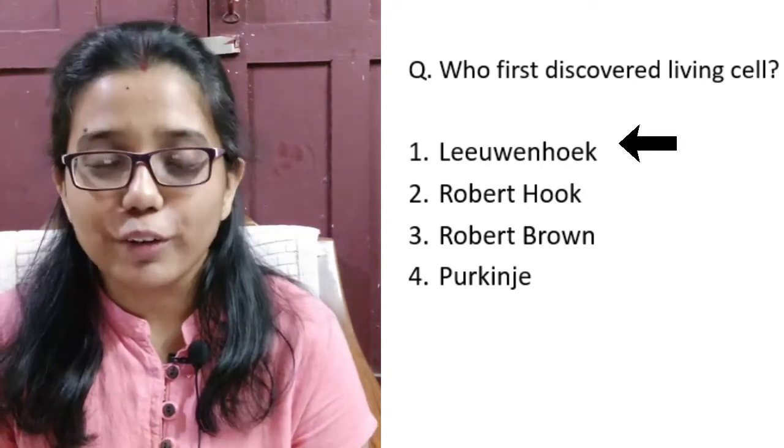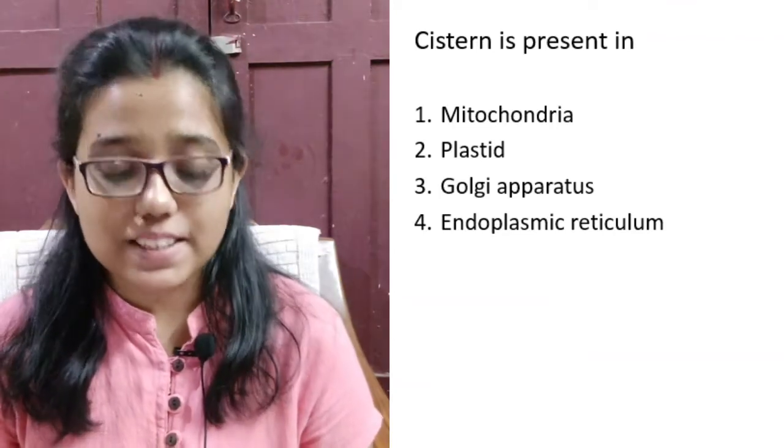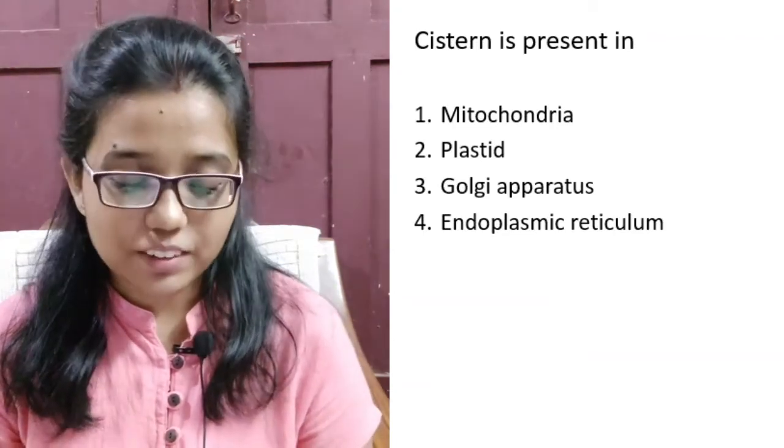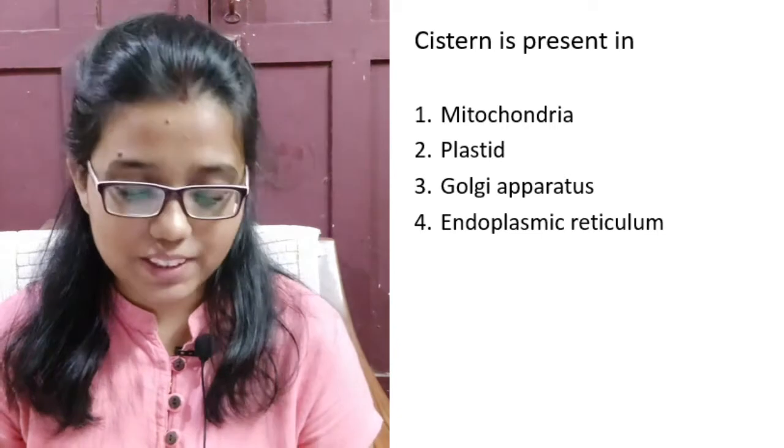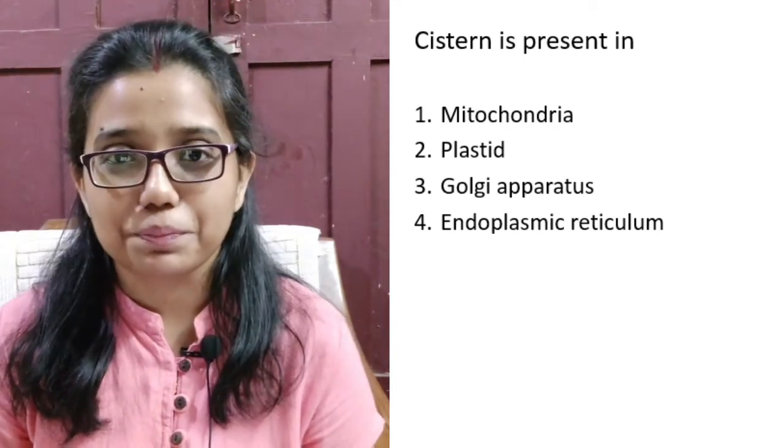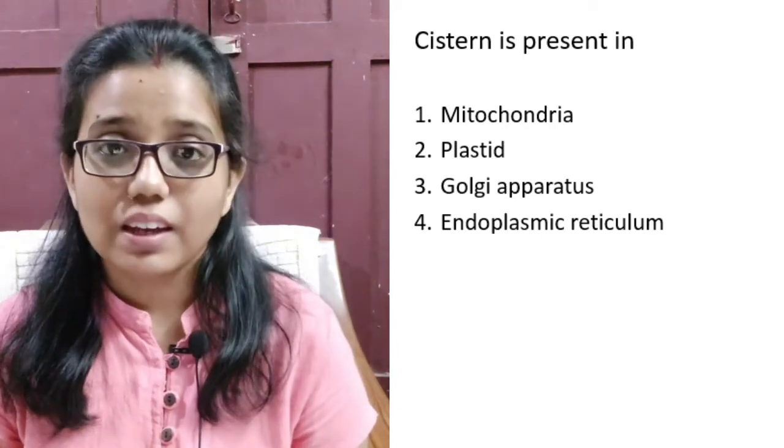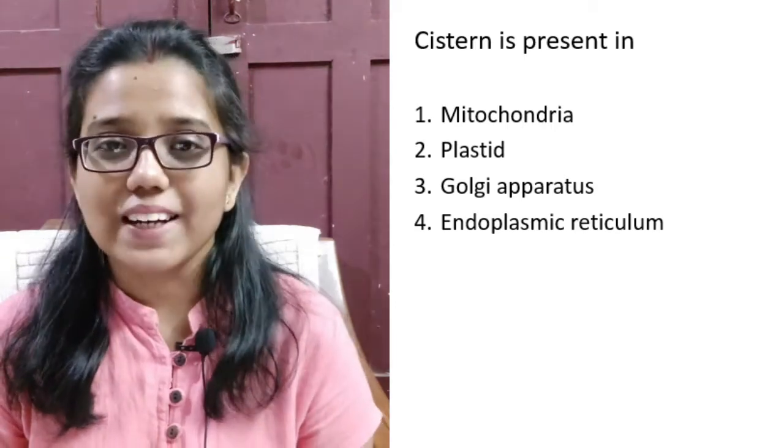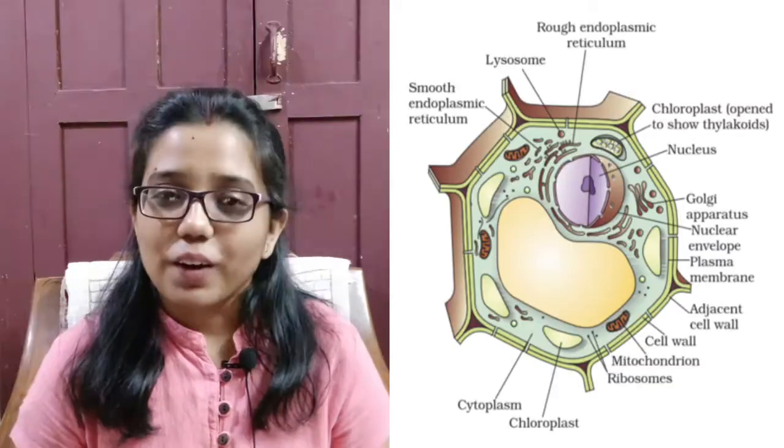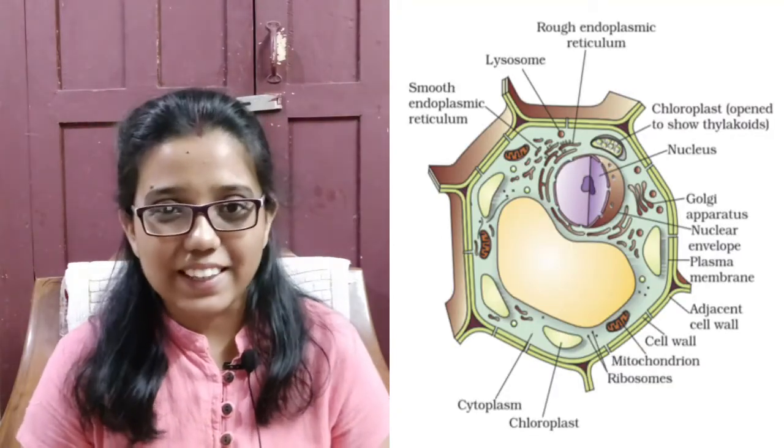Correct answer is Leeuwenhoek. Cisterns are present in Mitochondria, Plastids, Golgi apparatus, or Endoplasmic reticulum? Time up. Correct answer is Golgi apparatus. OK students, bye. See you in the next class.